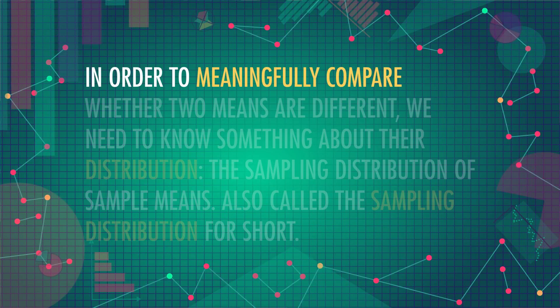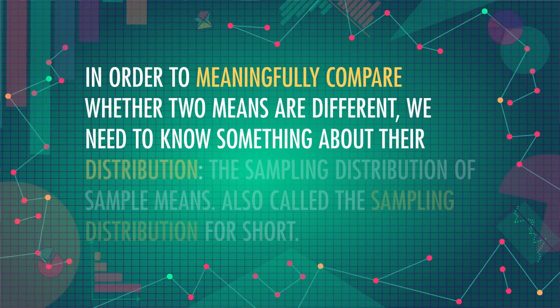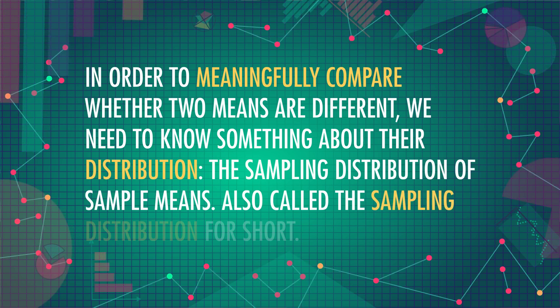In order to meaningfully compare whether two means are different, we need to know something about their distribution — the sampling distribution of sample means, also called the sampling distribution for short. The distribution of sample means is not something we create. We don't actually draw an infinite number of samples to plot and observe their means. This distribution, like most distributions, is a description of a process.